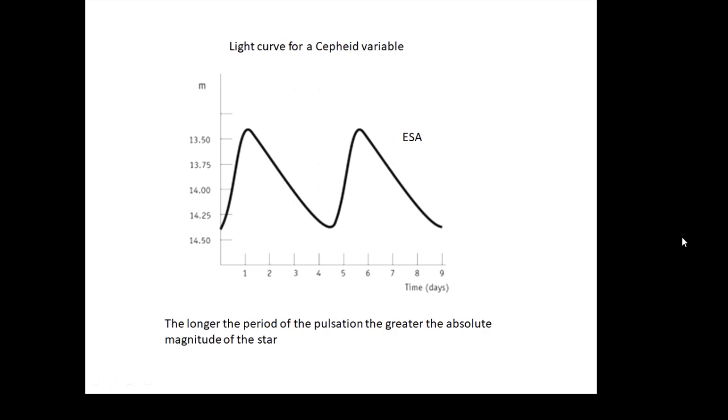The interesting thing about them is that the longer their period is, the greater their absolute magnitude. So if you can measure the period of their pulsation, you can work out their absolute magnitude, and if you know that, you can work out how far away they are. Cepheid variables.